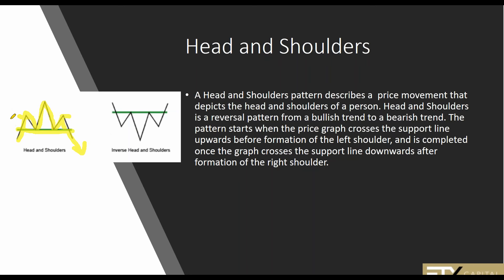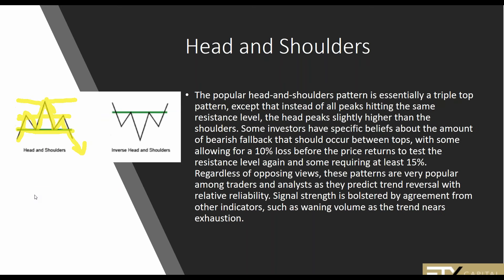I like to see a clear, distinct head and shoulders, but I don't do a precise mathematical calculation for exactly how high the head should be. When you see a pattern form and it forms a beautiful head and shoulders, you know that you have it. The popular head and shoulders pattern is essentially a triple top pattern, except the head peaks slightly higher than the shoulders. Some investors allow for a 10% bearish fallback between tops, while some require at least 15%. These patterns predict trend reversal with relative reliability, and signal strength is bolstered by waning volume as the trend nears its exhaustion.